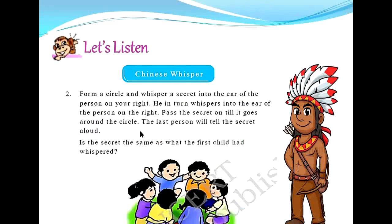Moving forward we have 'Let's Listen' — a Chinese whisper activity. How do you whisper something? You bring your voice down and then talk. Form a circle and whisper a secret into the ear of the person on your right. He in turn whispers into the ear of the person on his right. Pass the secret on till it goes around the circle. The last person will tell the secret aloud. Is the secret the same as what the first child had whispered?